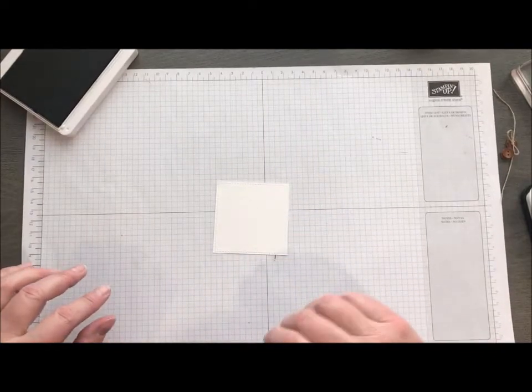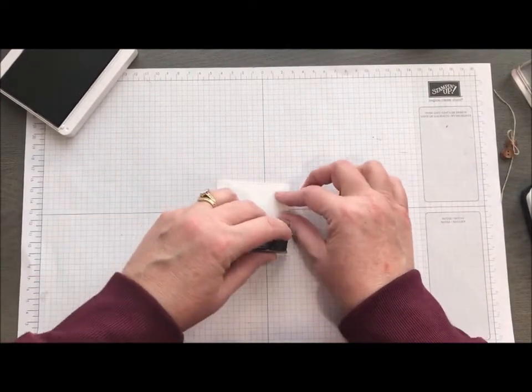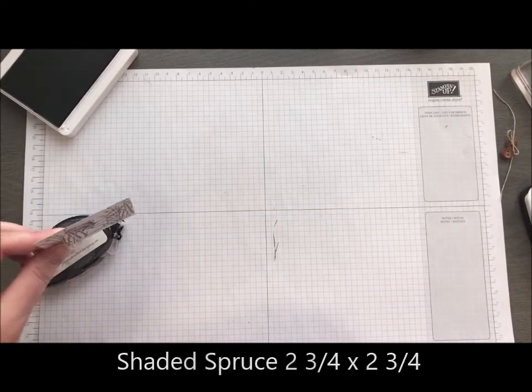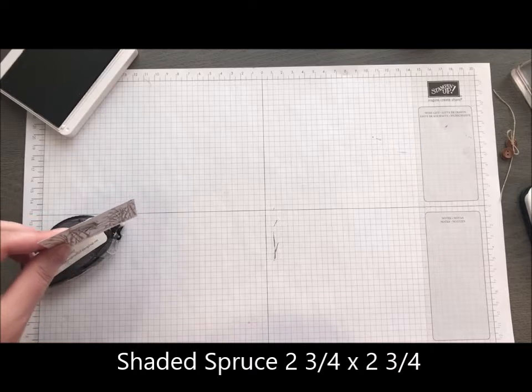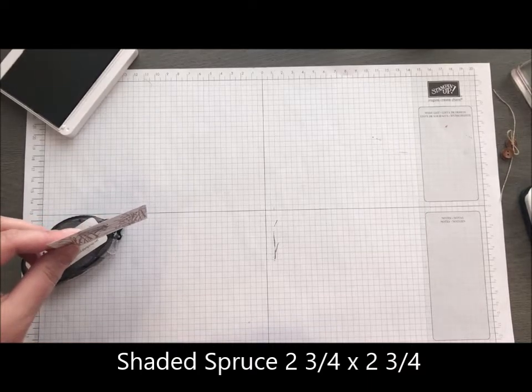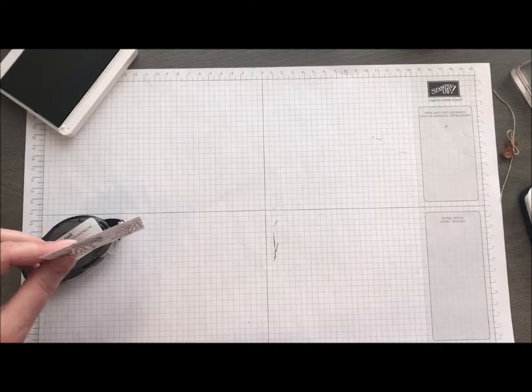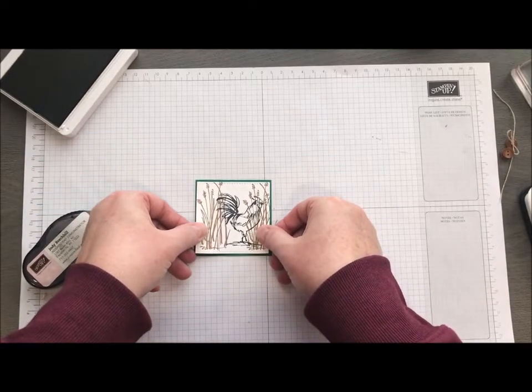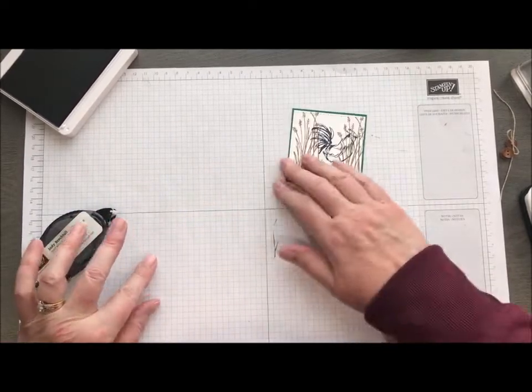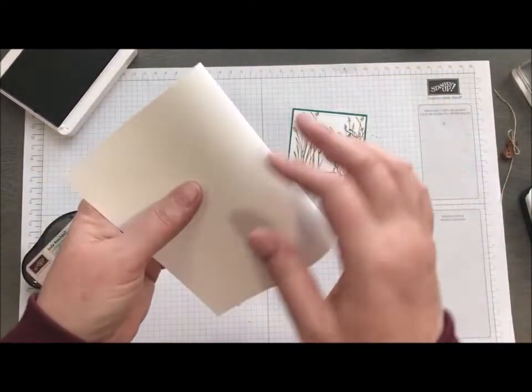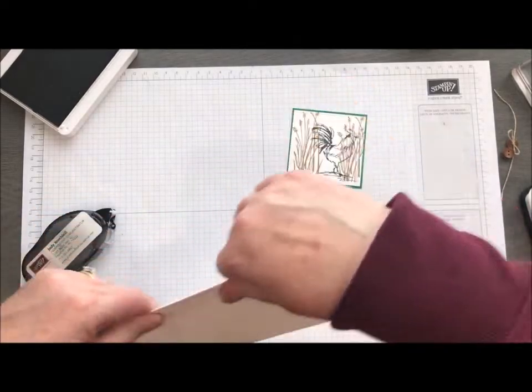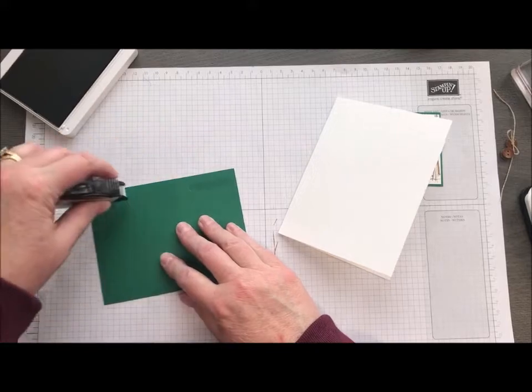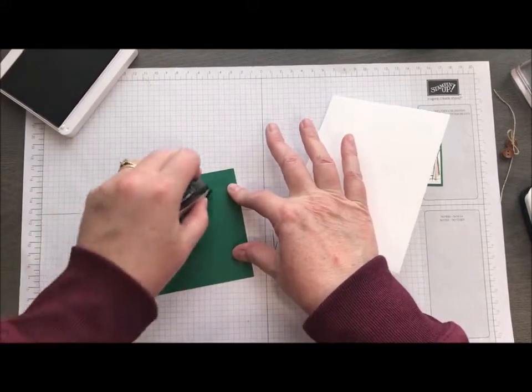So this piece can go ahead and get mounted on a square of Shaded Spruce. Which I should have all my pieces somewhere...oh my gosh, I can't pick them up. Come on. My fingers don't want to work this morning. So I just have a nice mat there. Then I have a piece of Whisper White cardstock. That's my card base. I'm going to attach a piece of Shaded Spruce to that base.